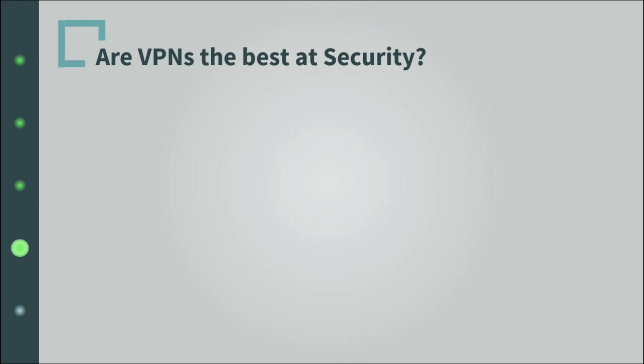If we list privacy and security solutions on the internet from weakest to strongest, it goes like this: first, proxies — they are pretty good for other reasons if your top priority is not privacy. Then VPNs, which we talked about. And ultimately Tor networks, which are the strongest in terms of security.